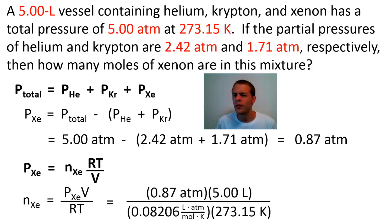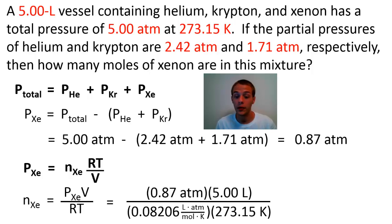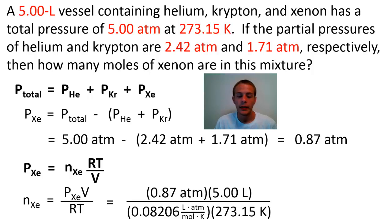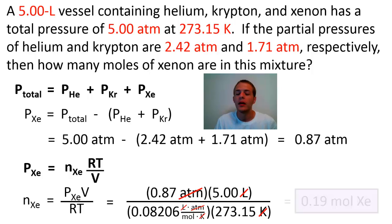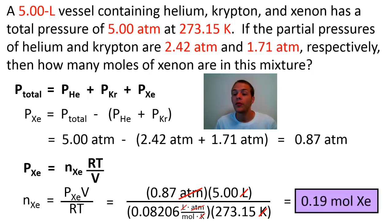With P_xenon = 0.87 atm, V = 5.00 L, R = 0.08206 L·atm/mol·K, and T = 273.15 K, the atmospheres, liters, and kelvins all cancel. Rounding to two significant figures, the answer is 0.19 moles of xenon.